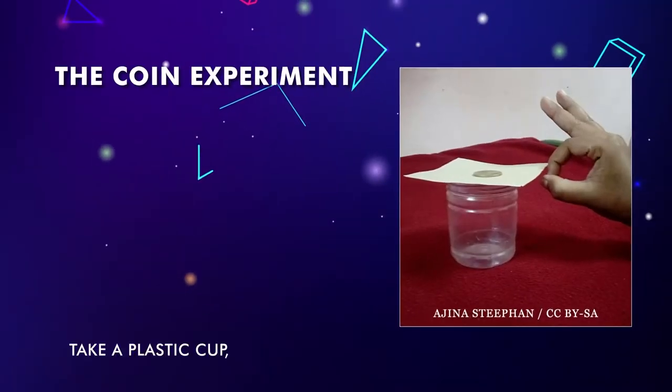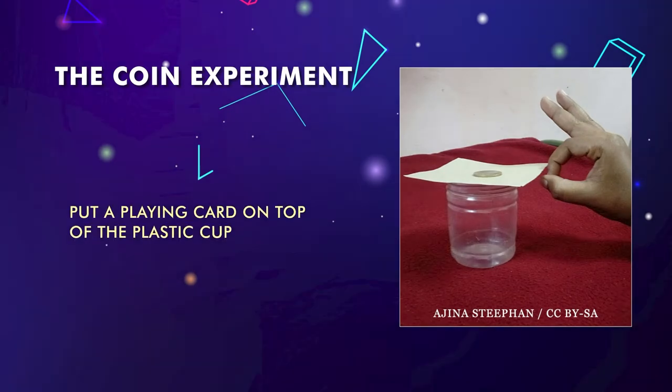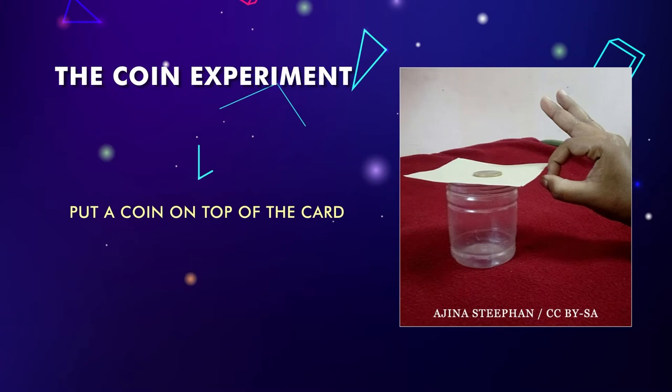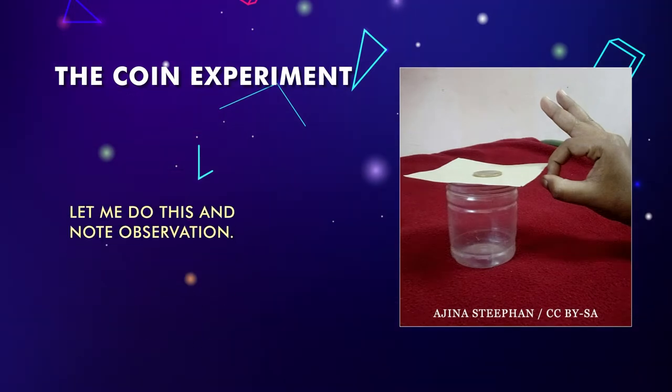These ideas of Galileo were later used by Newton. To introduce Newton's first law of motion, there are many activities suggested in different science textbooks. Engage your students in those activities. You can take a plastic cup, a playing card or hard card sheet, and a coin. Place the playing card on top of the plastic cup, put the coin on top of the card, and ask learners to suddenly flick the card. Let learners do it and note their observations.